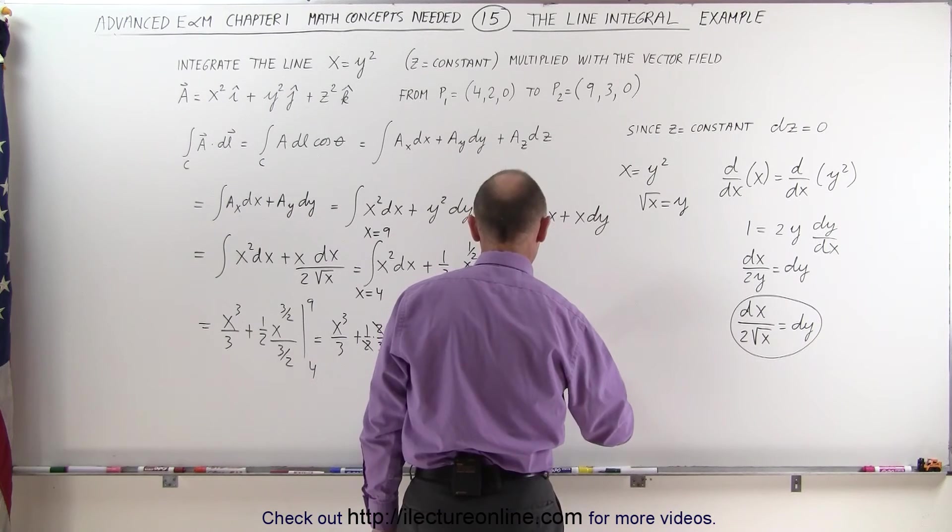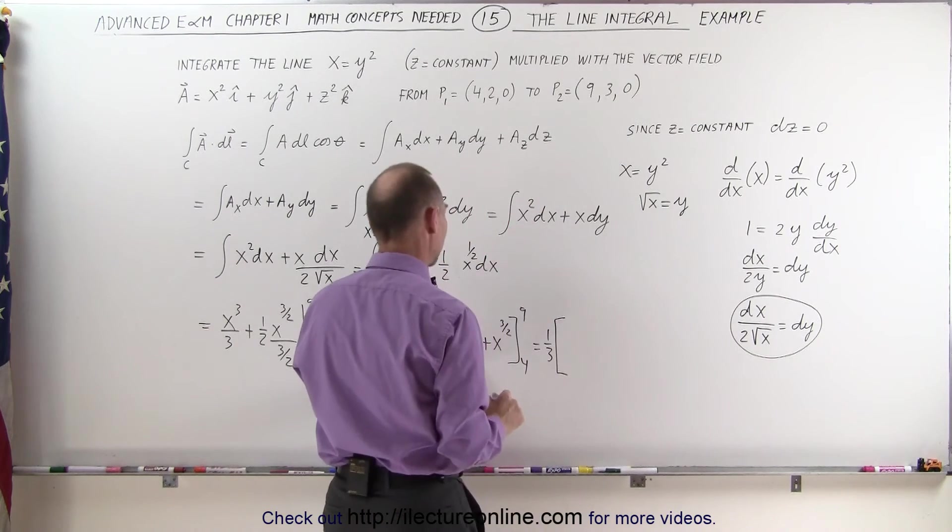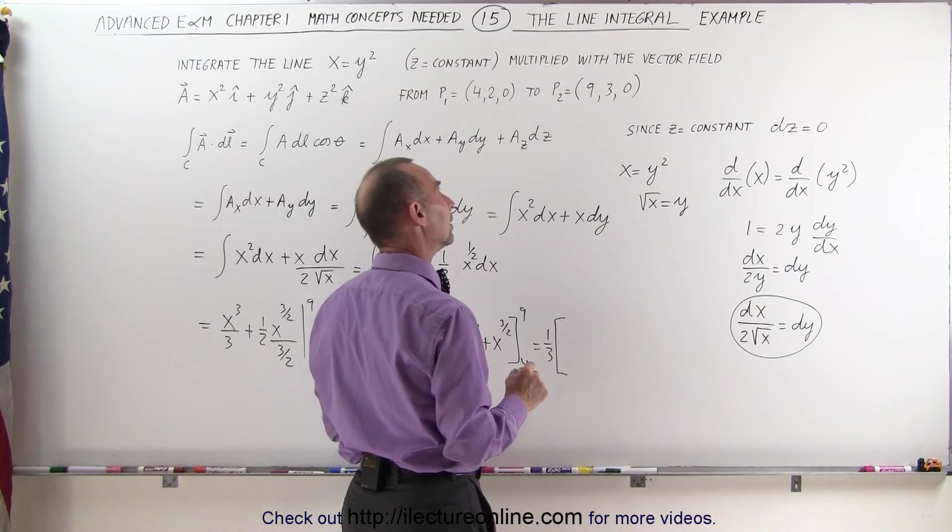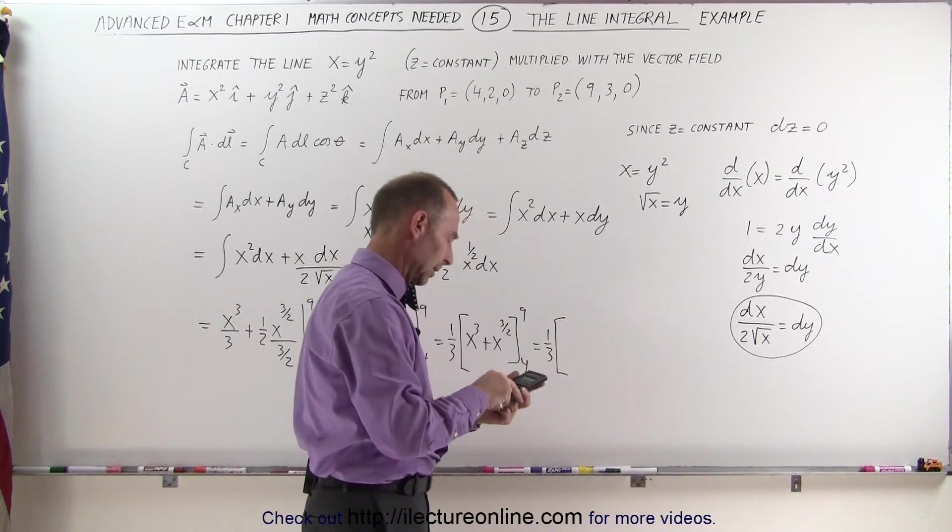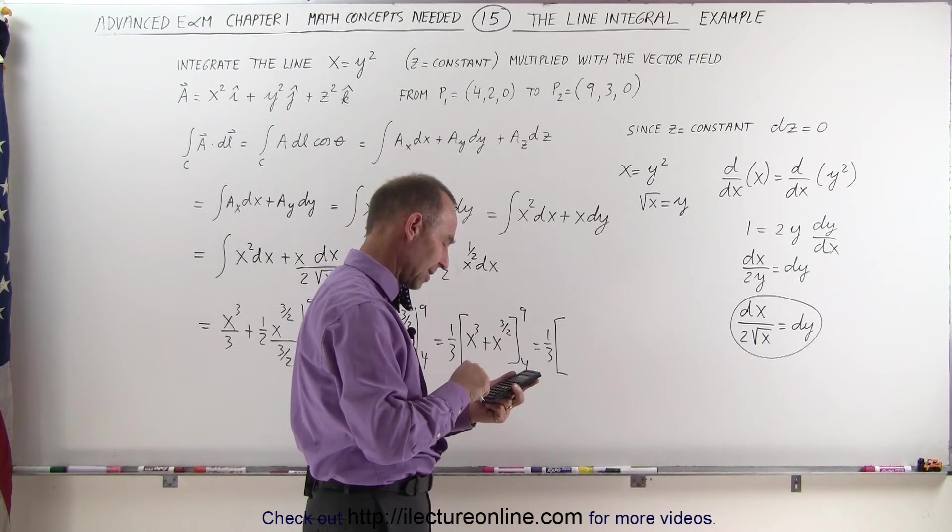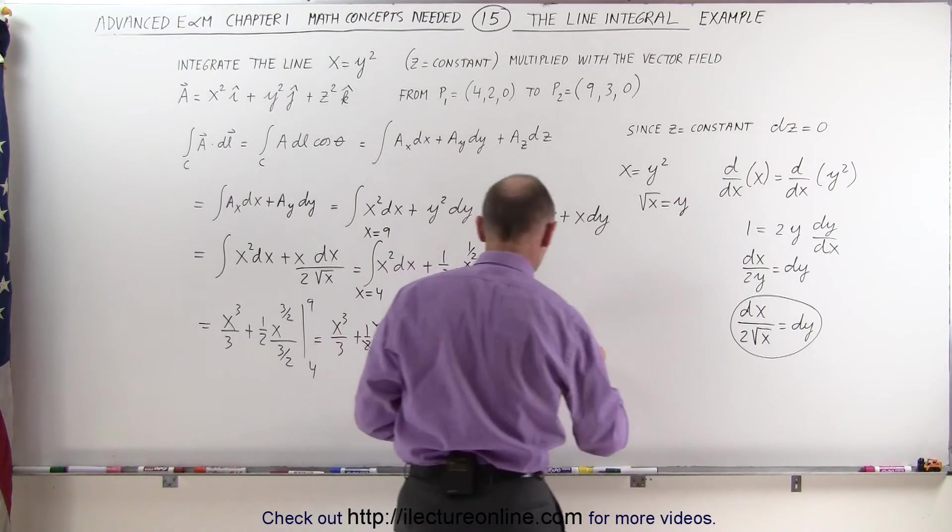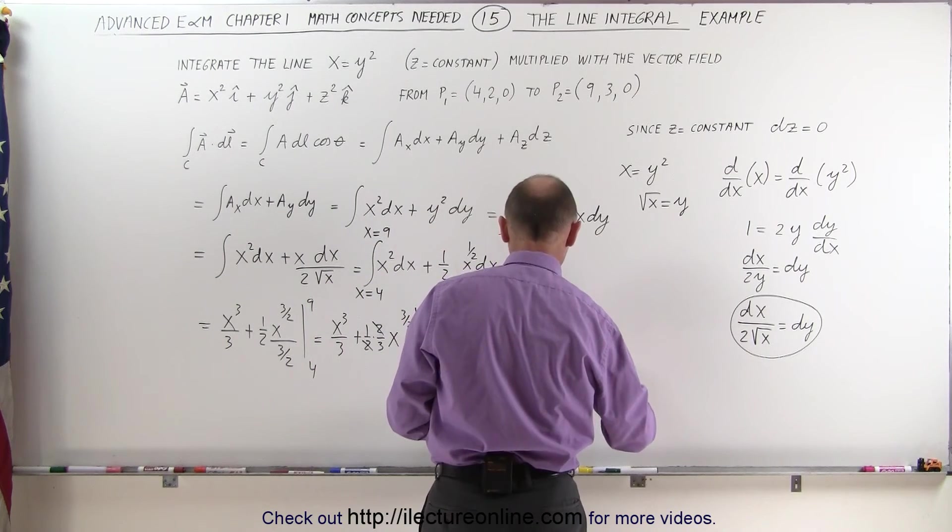This equals one-third times 9 cubed. That's 81. That's, I believe, 721, if I'm not mistaken. Let me check it real quick. 9 times 9 times 9 equals... 729. Good thing I checked.